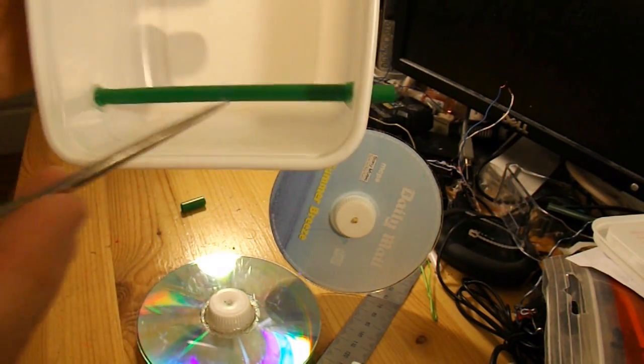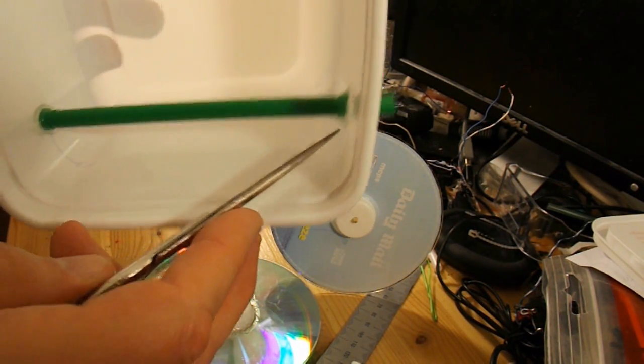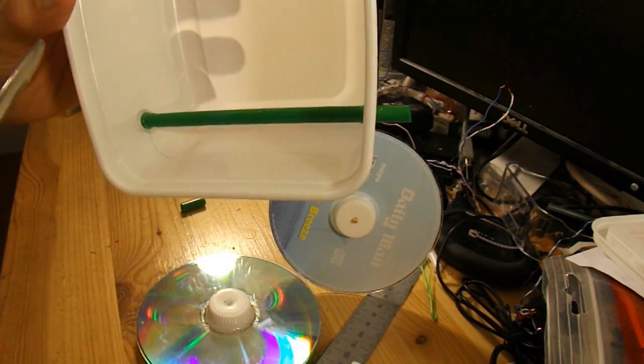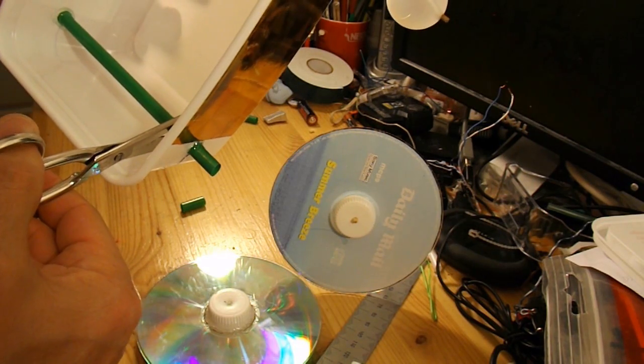I'll put a bit of hot glue round the edges of the tubes there to hold them into the carton so that I can cut the rest of it away now.